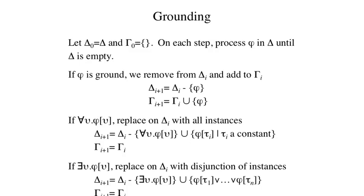Once we have our sentences in prenex form, we compute the grounding. The procedure is described here. We start with our initial set delta of sentences, and we incrementally build up our grounding, gamma. On each step, we process a sentence in delta using the rules shown here. The procedure terminates when delta becomes empty.